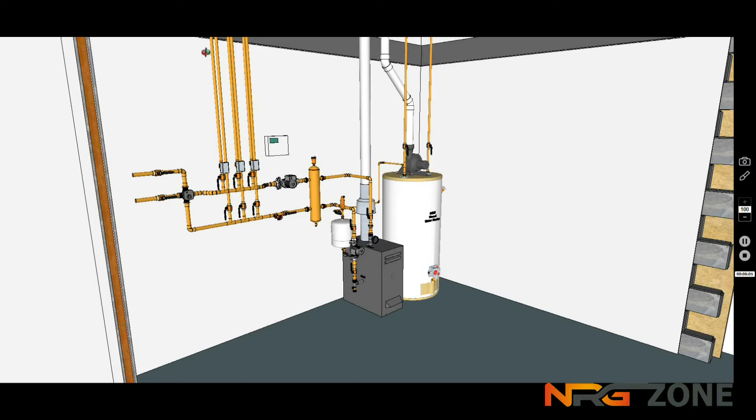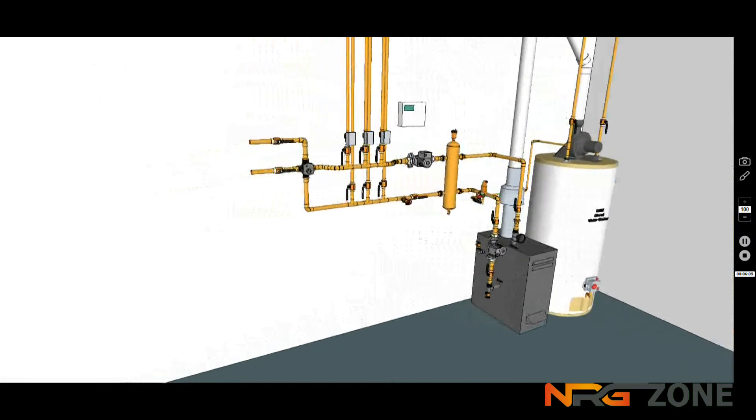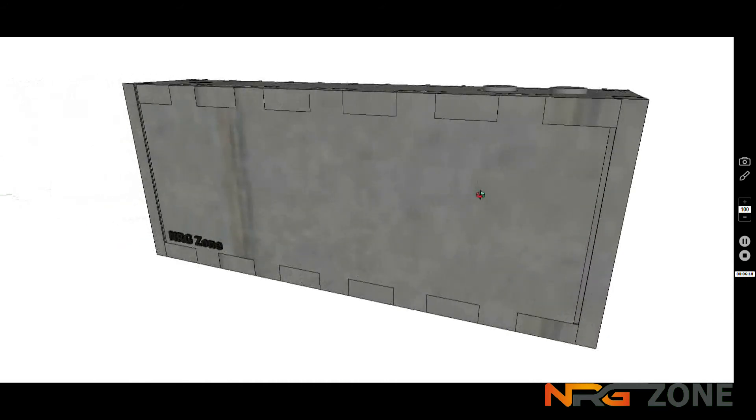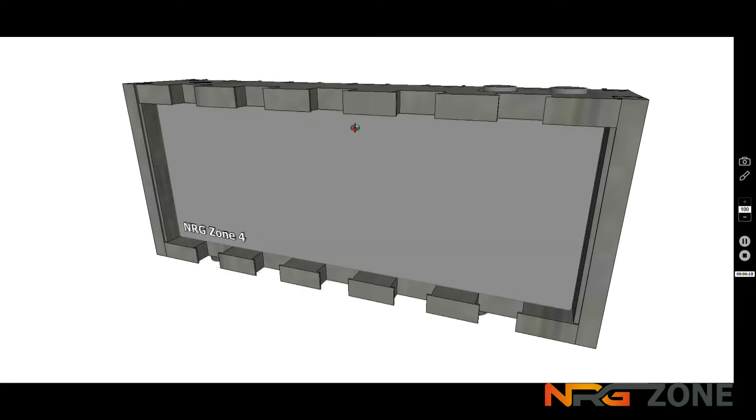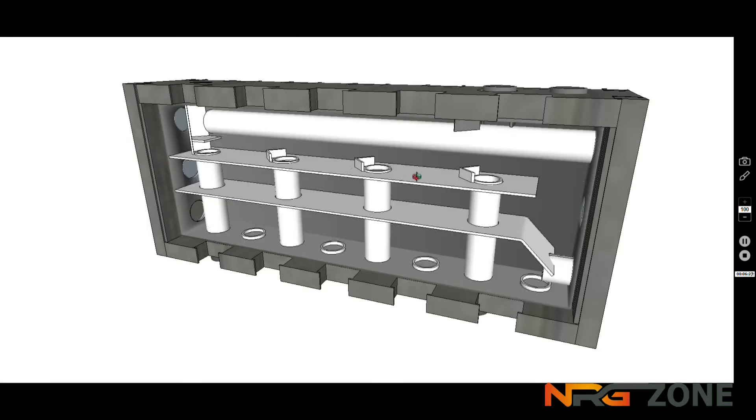So we're going to move on and look at how that system can be remedied using an energy zone manifold. The energy zone manifold comes pre-insulated, and in this unit, it's a four zone unit. You'll see that inside, if we remove the front cover of the insulation, there is the metal energy zone unit itself.